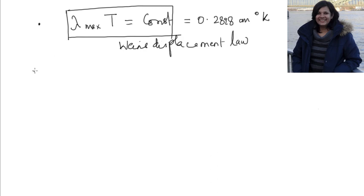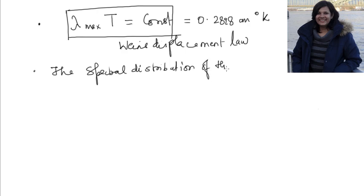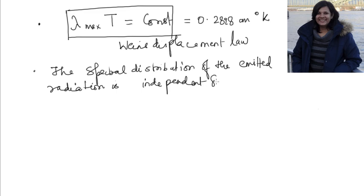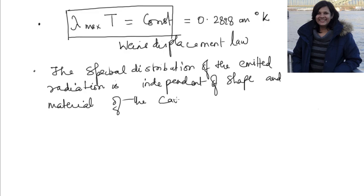Another empirical observation was that the spectral distribution of the emitted radiation is independent of the shape of the cavity and the material of the walls. This was a very important observation, and these were the two experimental observations.